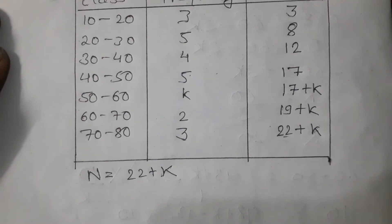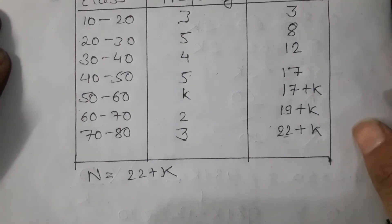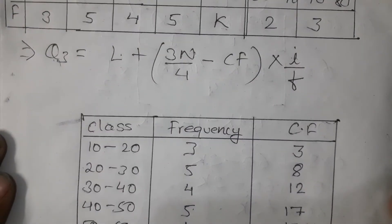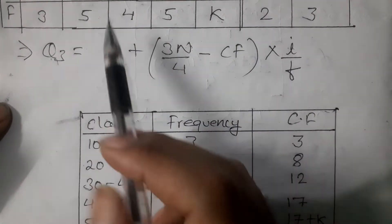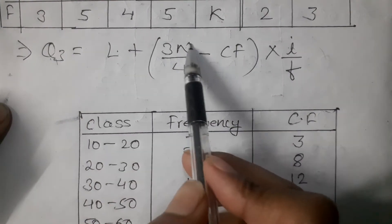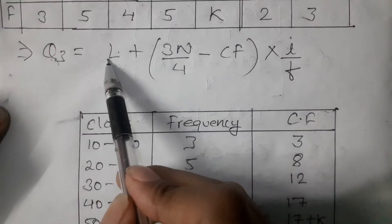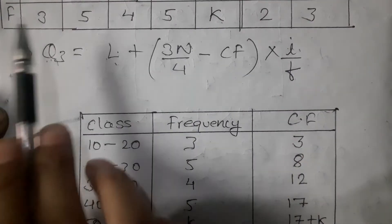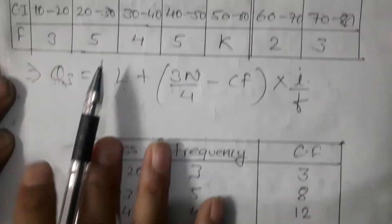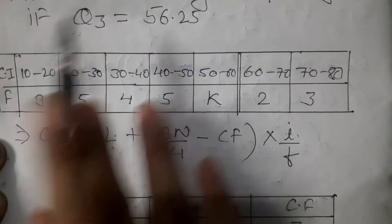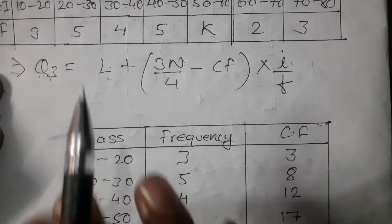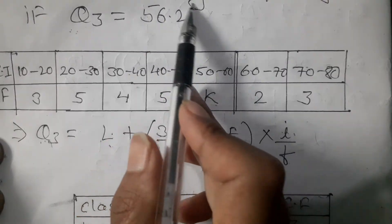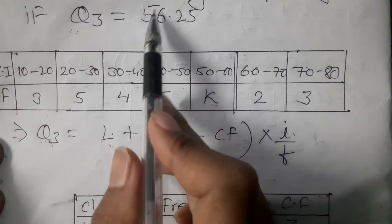Now, what do we need to do with the formula? We have Q3, and in the formula we have N, L, CF, I, and F. Q3 is already given as 56.25. So we need to identify each component from our table to substitute into the formula.